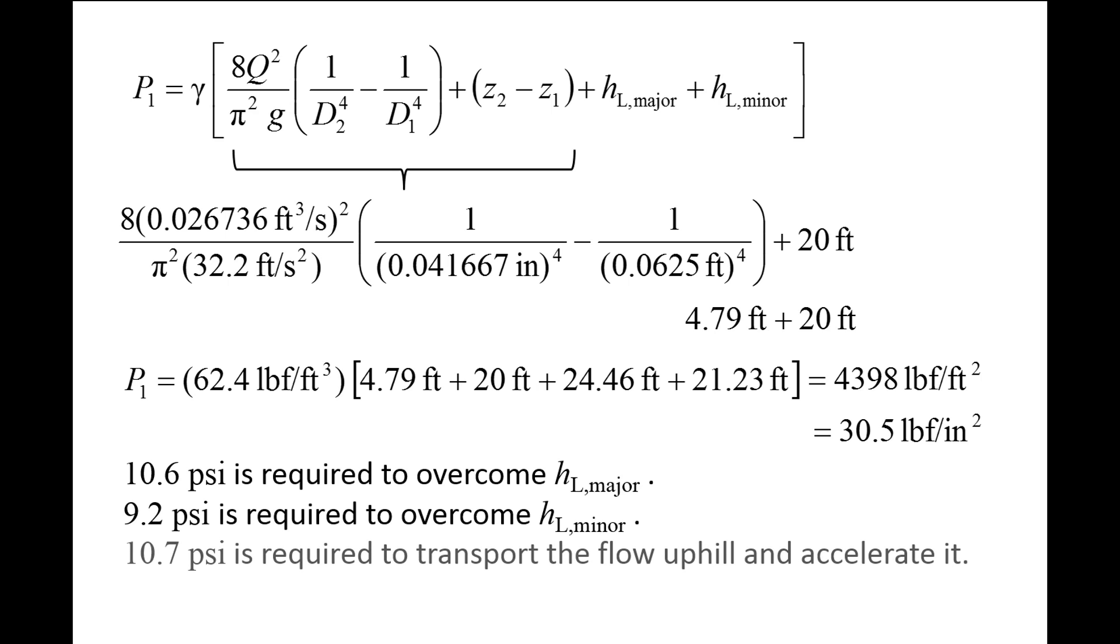If we multiply the two remaining terms, 4.79 feet plus 20 feet, with the specific weight, we obtain 10.7 psi. This means that only 10.7 psi would be required to transport water uphill and accelerate the flow if there were no frictional losses. In other words, about two-thirds of the required pressure at the inlet is used to overcome friction.